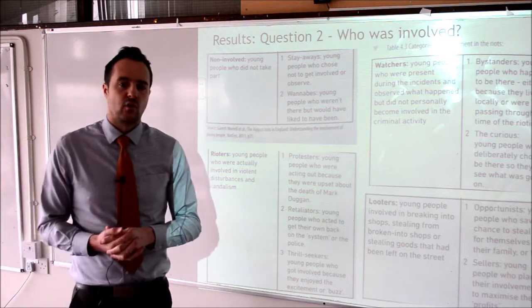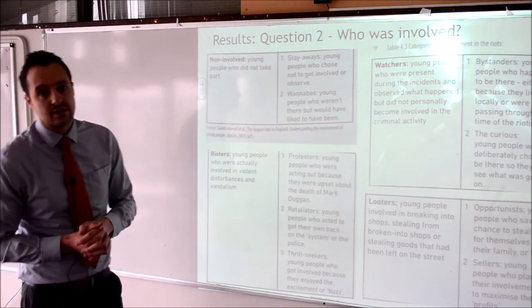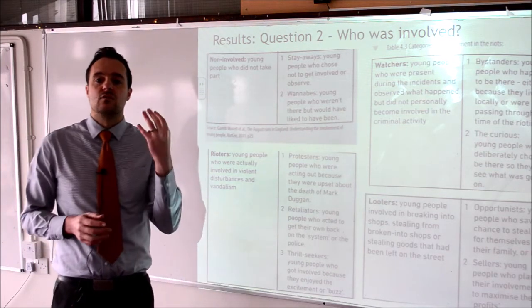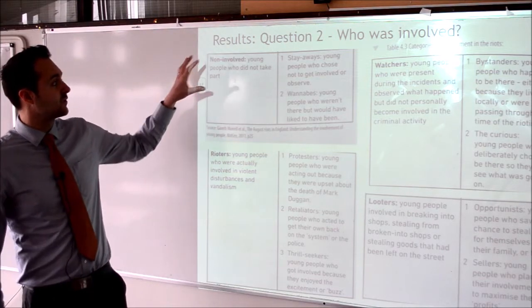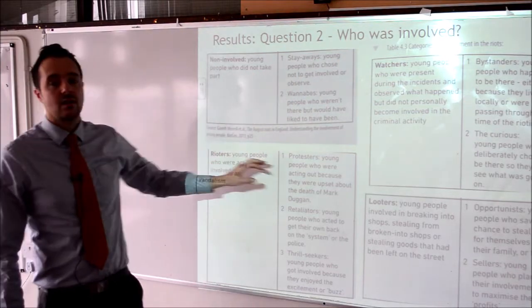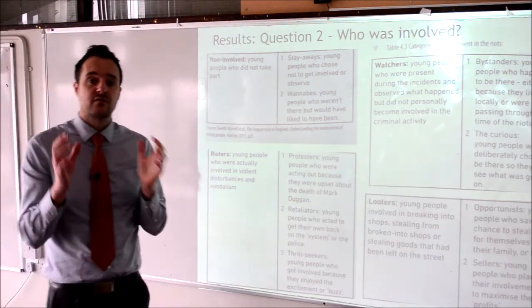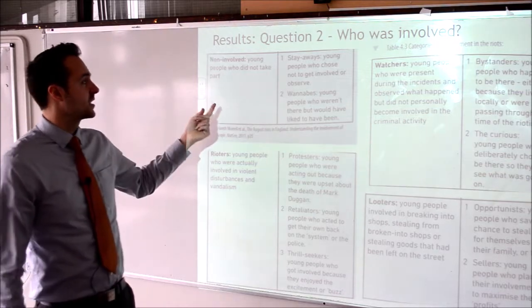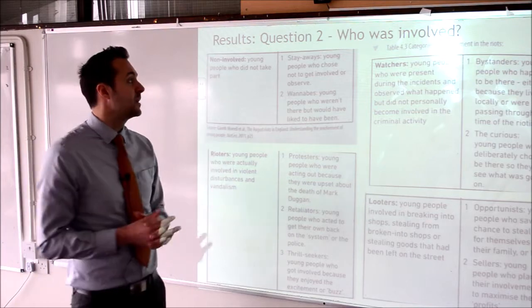Moving on to who was involved — the next research question. The report categorised involvement into four categories, escalating from the non-involved, through to watchers, through to rioters, and finally to people involved in the looting. Within those four categories were different types of people. The first category, the non-involved, had two different types. The first were people who chose to stay away — they knew what was going on but actively decided not to get involved.